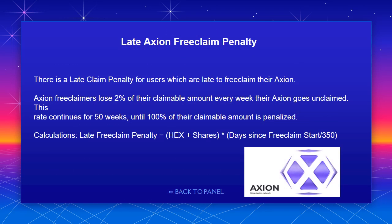Late Axion free claim penalty: there is a late claim penalty for users who are late to free claim their Axion. Free claimers lose 2% of their claimable amount every week their Axion goes unclaimed. This rate continues for 50 weeks, until 100% of their claimable amount is penalized. Calculation: late free claim penalty equals Hex plus shares, multiplied by days since free claim start divided by 350.